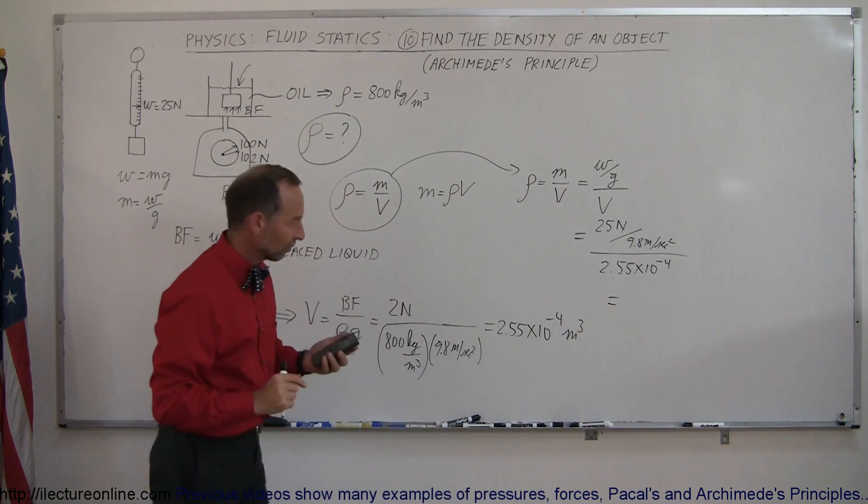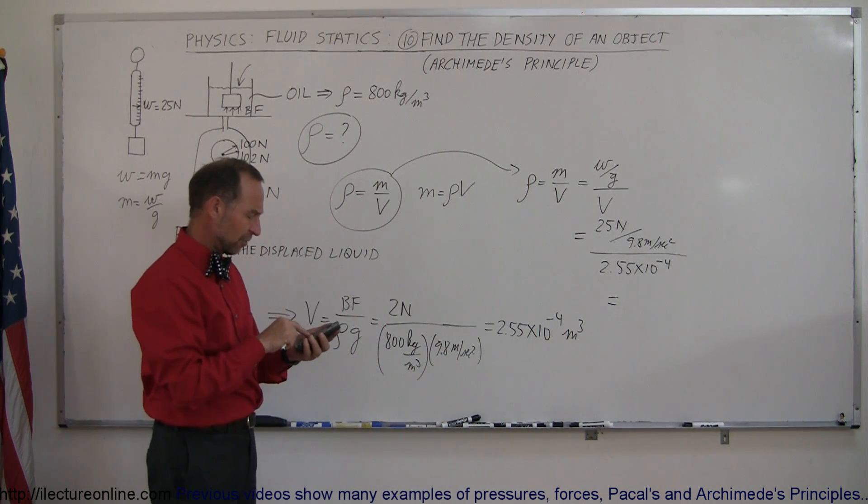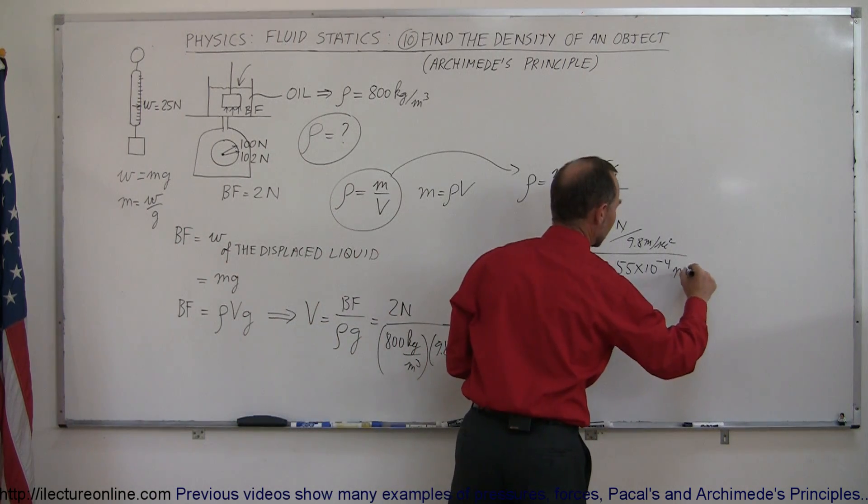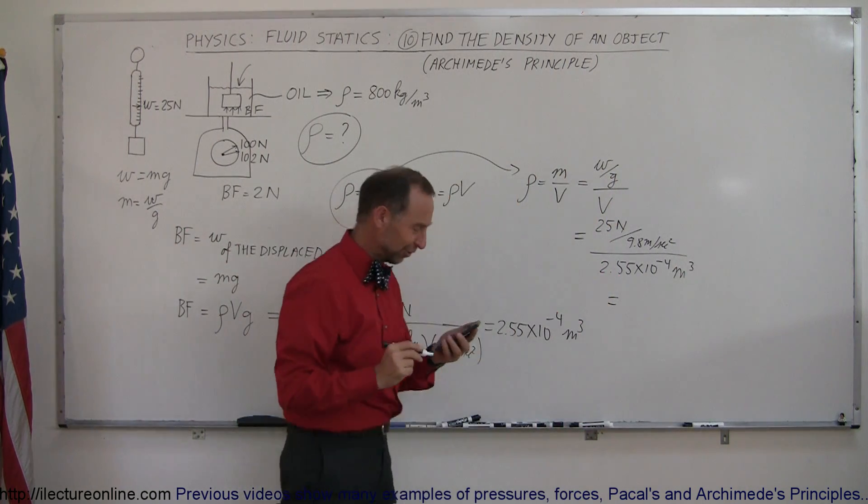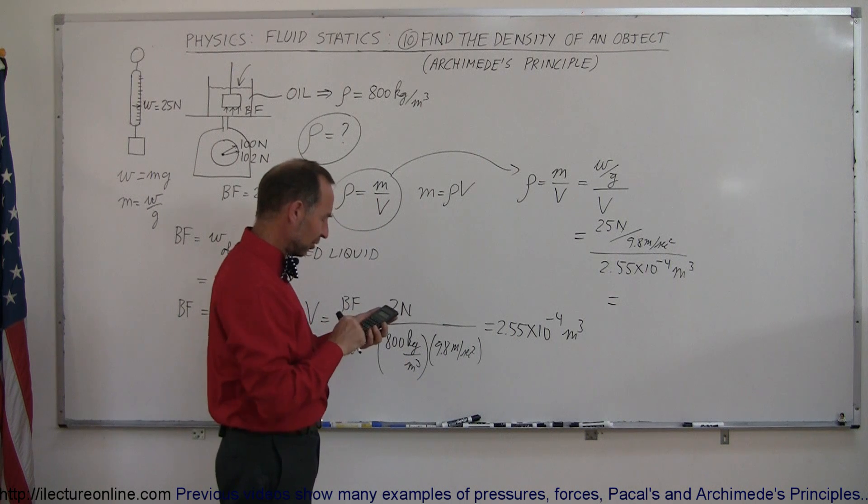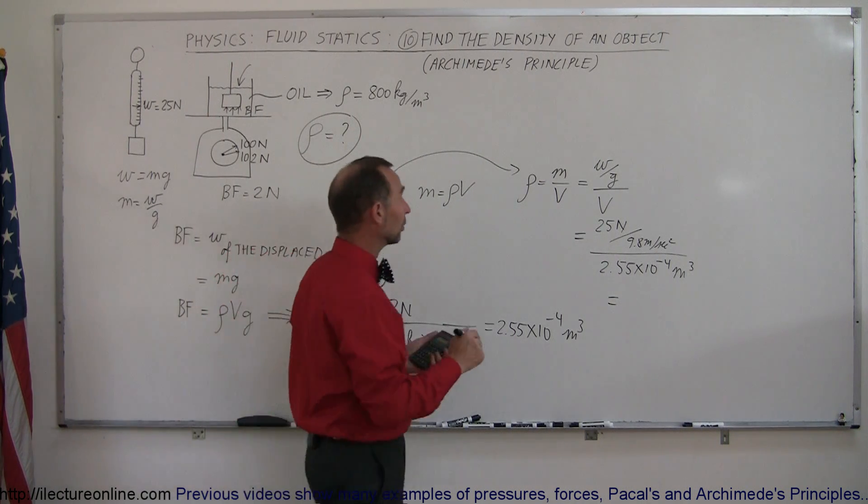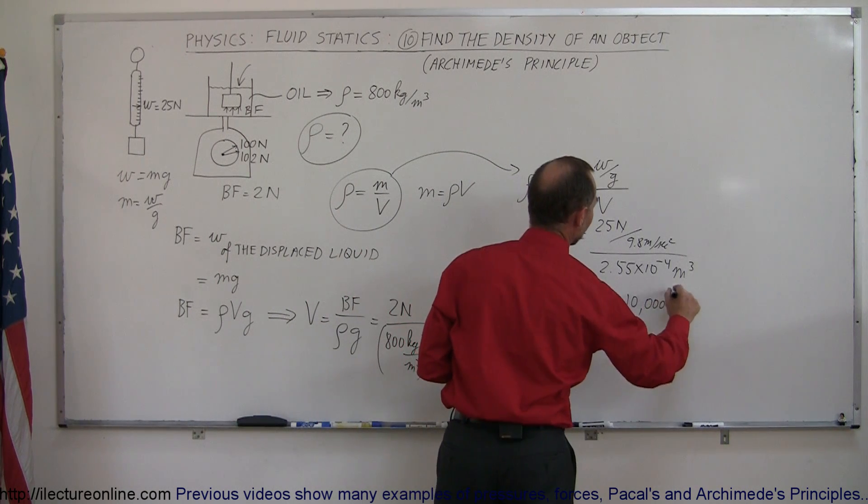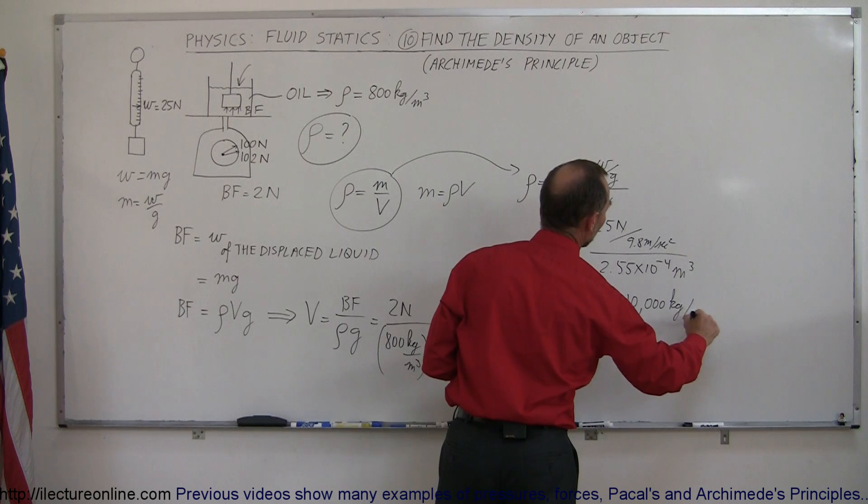And let's see what that gives us. So take the inverse of that. Oh, just to be complete, I should put down the units. There we go. So we have the inverse times 25 divided by 9.8. And I get 10,000. So the density is equal to 10,000 kilogram per cubic meter.